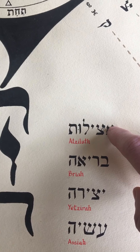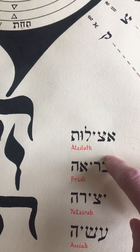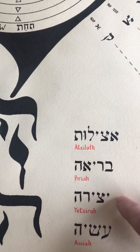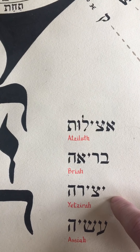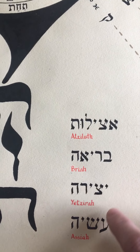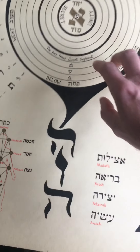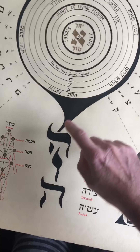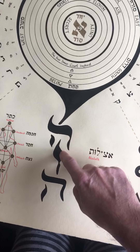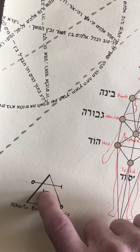Here we have the four worlds: Atzilut, the archetypal world; Bria, the creative world; Yetzirah, the formative world; and Asiya, the material world. And here is the big Yud-Hey-Vav-Hey. This is my signature.